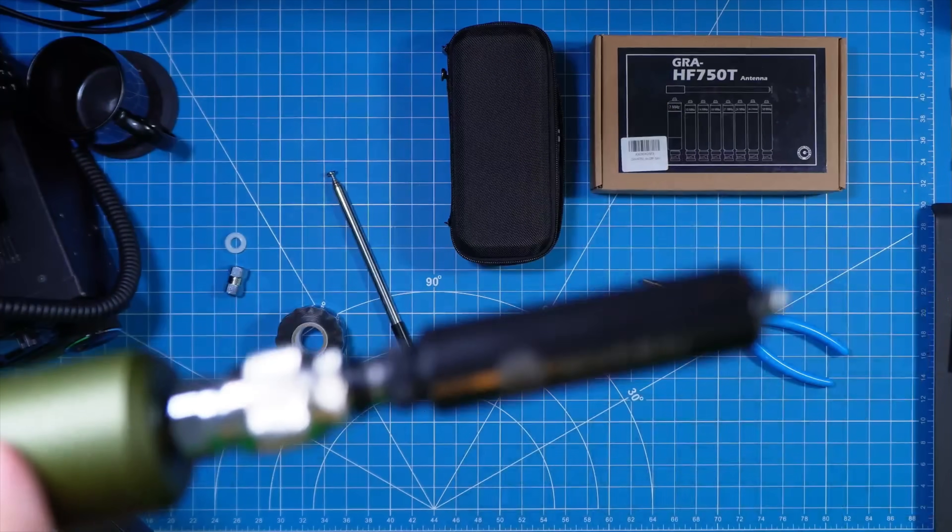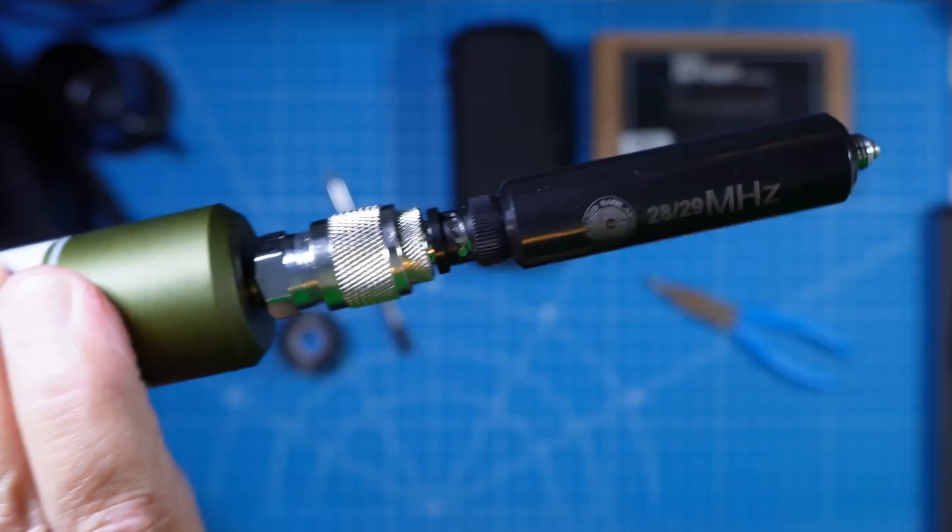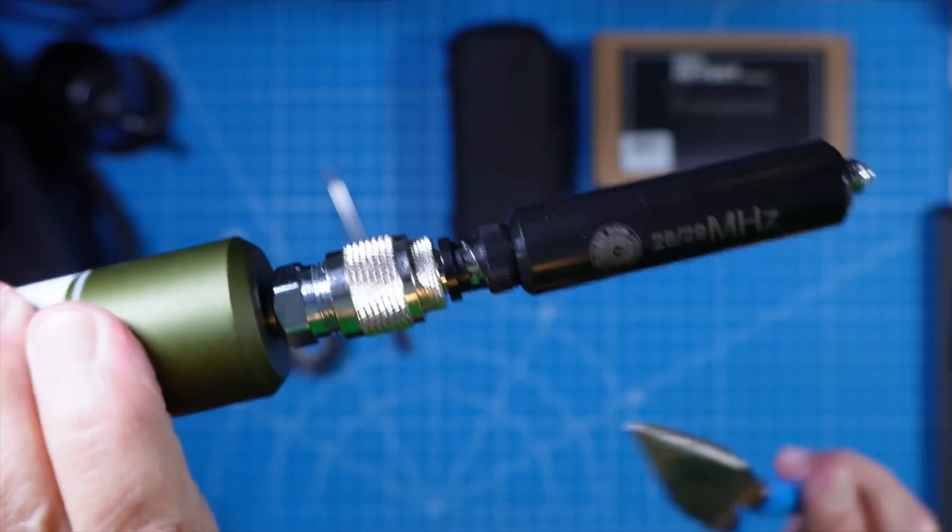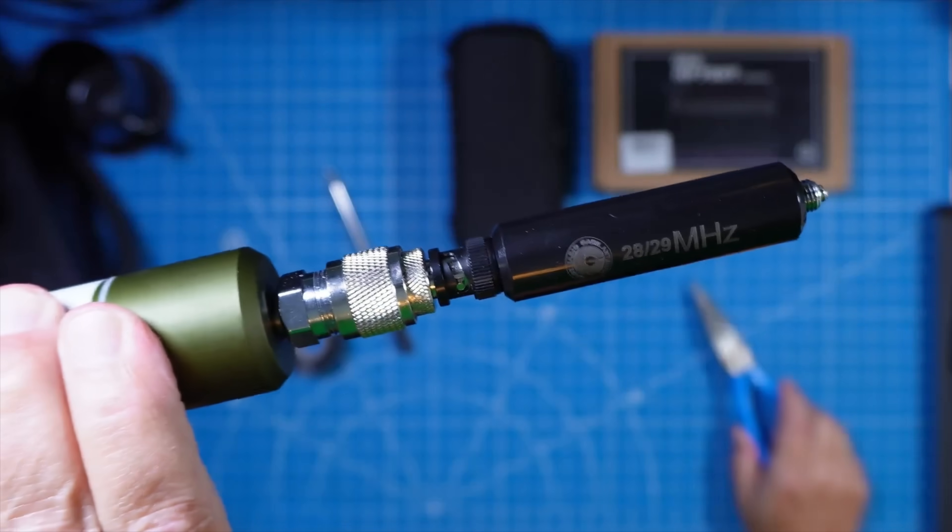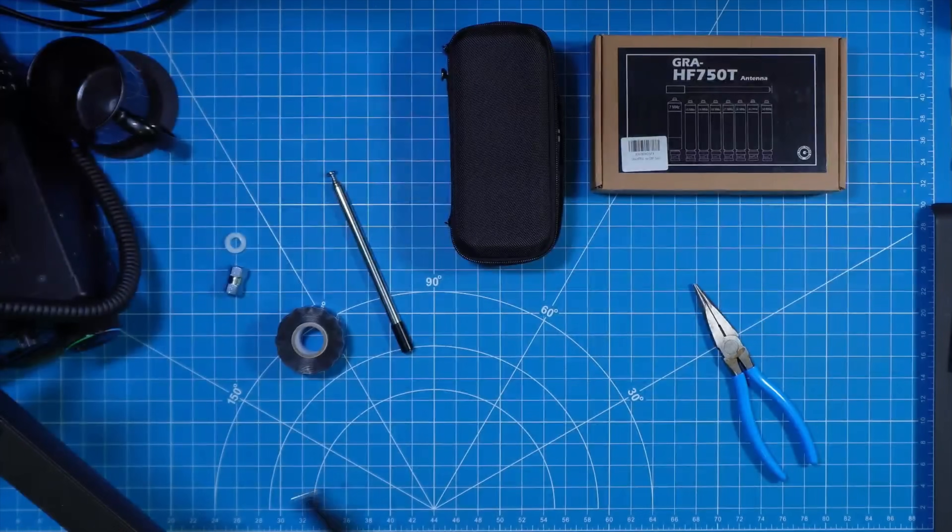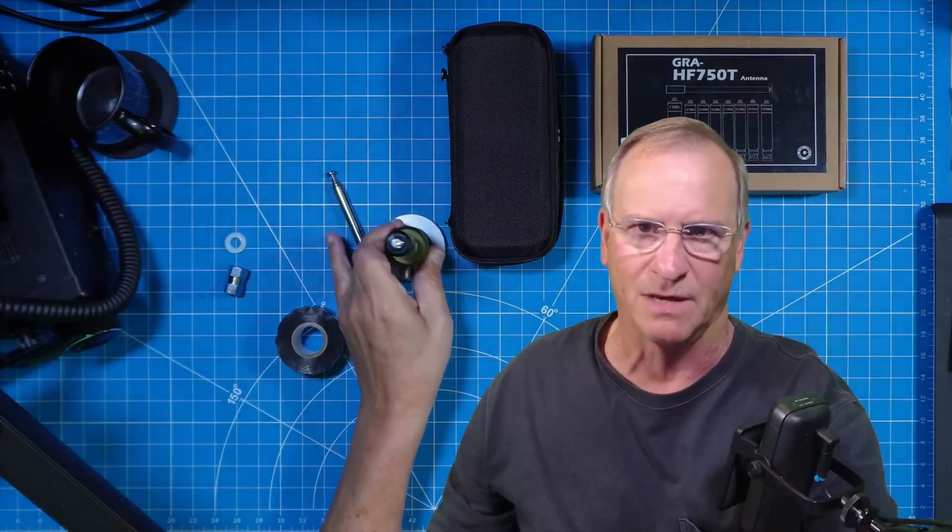I would take some self-amalgamating tape and I would wrap that BNC. Let's get my arm out of the way. I would wrap, let's get me out of the way. Good grief. There we go, Bob's gone. I would put some self-amalgamating tape from here all the way down, and that way you will protect this from the weather. And again, that assumes that you're going to put this up outside long term.